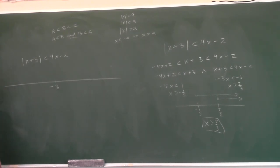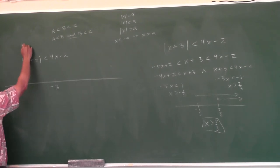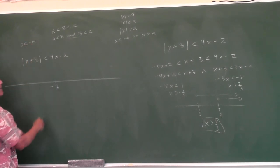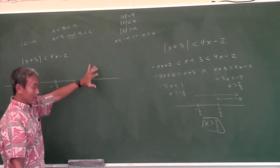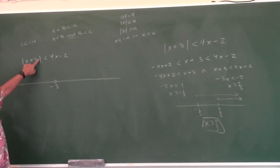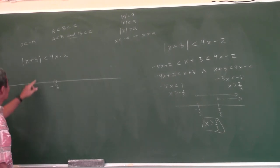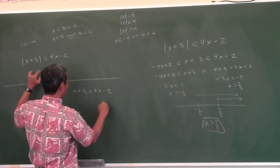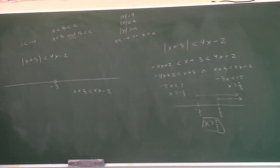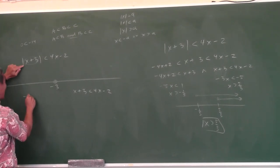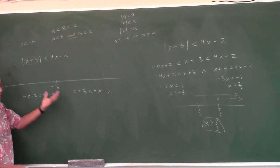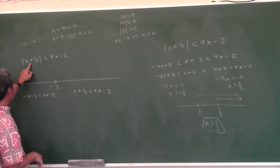Is negative 3 part of the solution? Plug it in: you get 0 is less than negative 14 — that's false. Open circle. Now think of a number bigger than negative 3, like zero: is the inside of the absolute value positive or negative? Positive — so you leave it alone. Now a number less than negative 3, like negative 4: the inside is negative, so you negate it. That's just using the definition of absolute value.